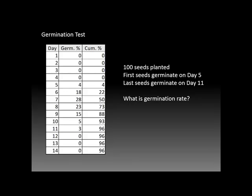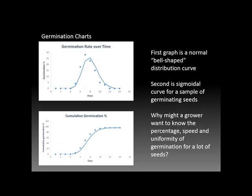I made up some dummy data for a germination test similar to what you did with your moist paper towels. I created a chart showing for each day after the seeds were placed in the paper towel what the germination percentage was, and then produced the cumulative germination — a running total from the day the first seed started to germinate until germination stopped, in this case on day 12. For the hundred seeds that were planted, the first seeds germinated on day 5, the last on day 11, and it will be up to you to figure out the germination rate for that lot of seeds.